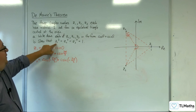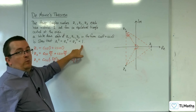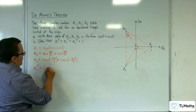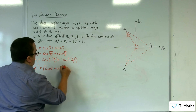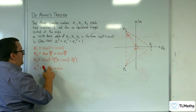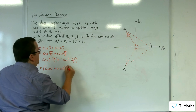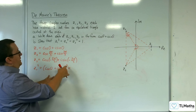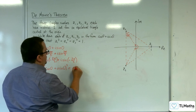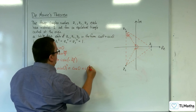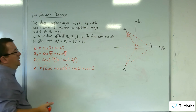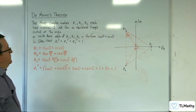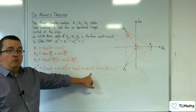Part B: show that Z1 cubed equals Z2 cubed equals Z3 cubed, which equals 1. So Z1 cubed is cosine 0 plus i sine 0, all cubed. By De Moivre's theorem, the 3 multiplies with the 0, so that's cosine of 0 plus i sine of 0, which is just 1, because cosine of 0 is 1 and sine of 0 is 0.